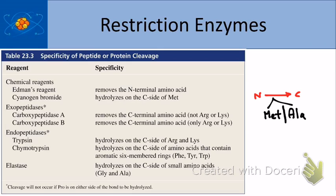And finally, there's something that we call elastase. And elastase hydrolyzes on the C-side of glycine and alanine, small amino acids. Remember, glycine has a hydrogen as the R-group, and alanine has a methyl group.